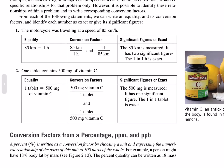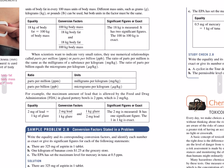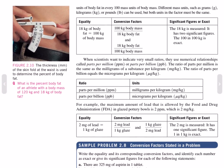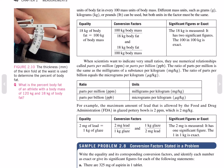Conversion factors from a percentage, parts per million, or parts per billion. A percent is written as a conversion factor by expressing the numerical relationship of the part to 100 parts of the whole. For example, a person with 18% body fat has 18 mass units of fat per every 100 units of body mass. Different mass units such as grams, kilograms, or pounds can be used, but both units in the factor must be the same — for example, 18 grams of body fat per 100 grams of body mass, or 18 kilograms of body fat per 100 kilograms of body mass.